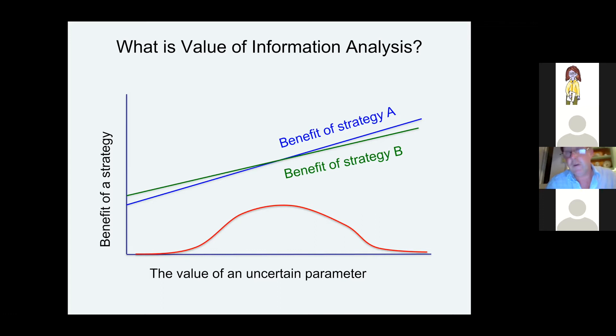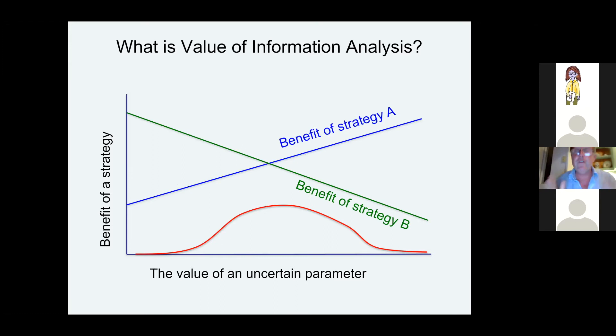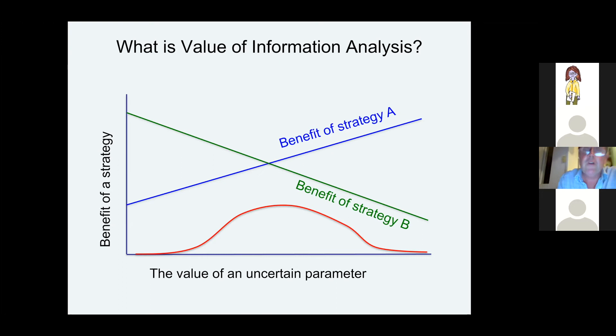The most interesting case is where the information is critically important. This is what I wish more scientists would do when studying threatened ecosystems, species, or processes: look at the different strategies and show that they perform incredibly differently depending on an uncertain parameter. If the uncertain parameter is very high, Strategy A is 10 times better; if it's very low, Strategy B is 10 times better. If we don't resolve this scientific issue — if we don't resolve this process — then we do not know what to do, and the benefits of resolving it are enormous.